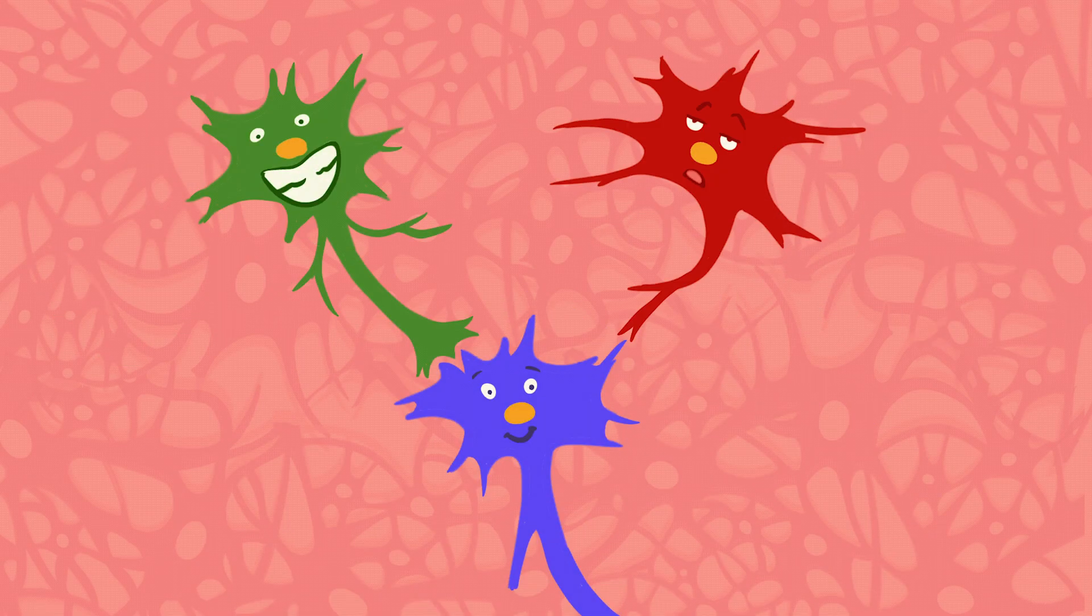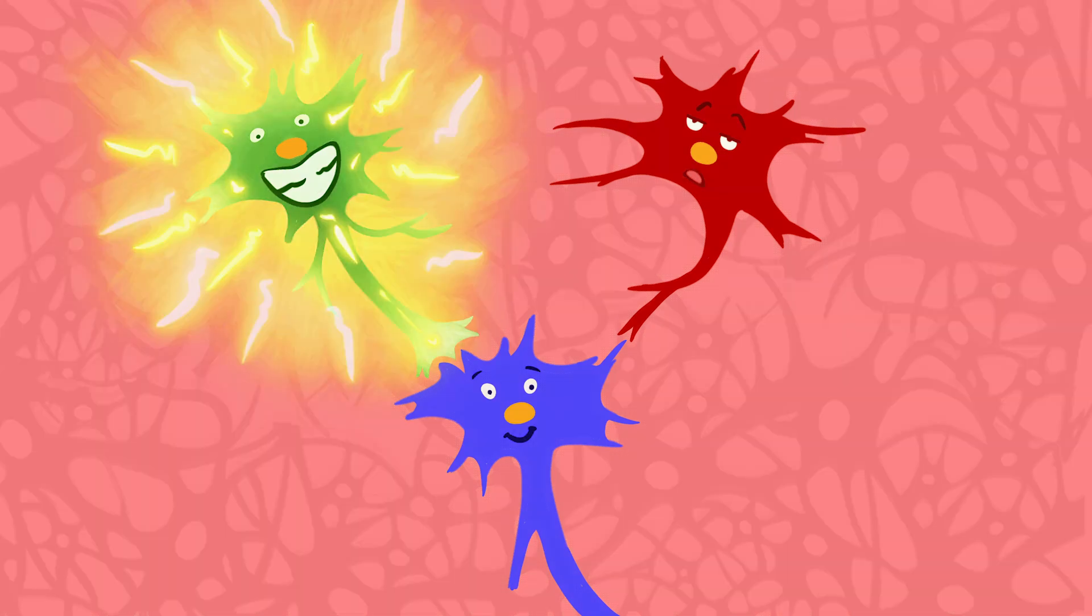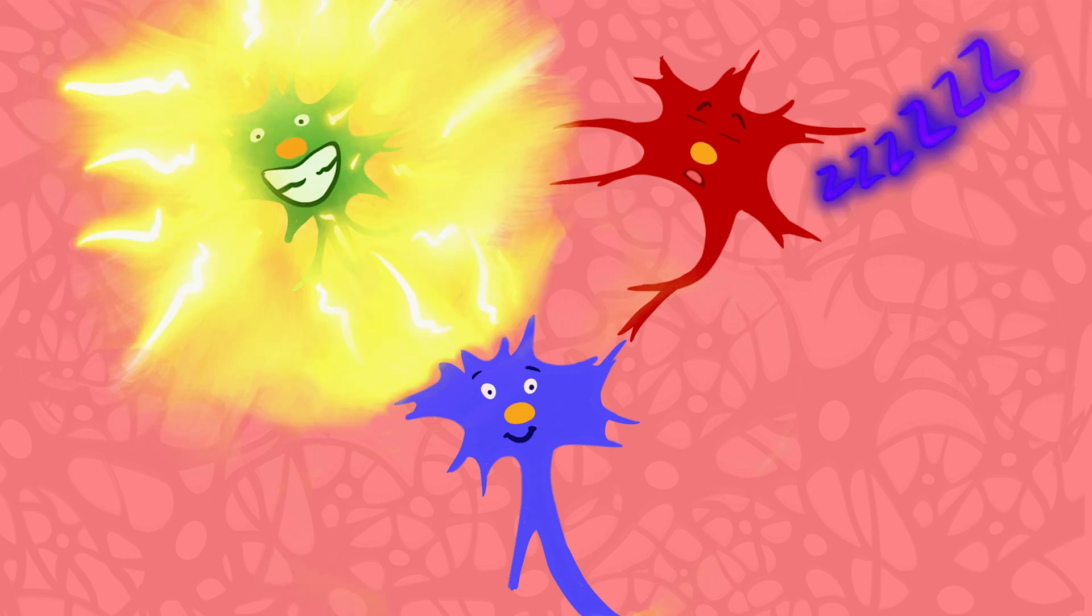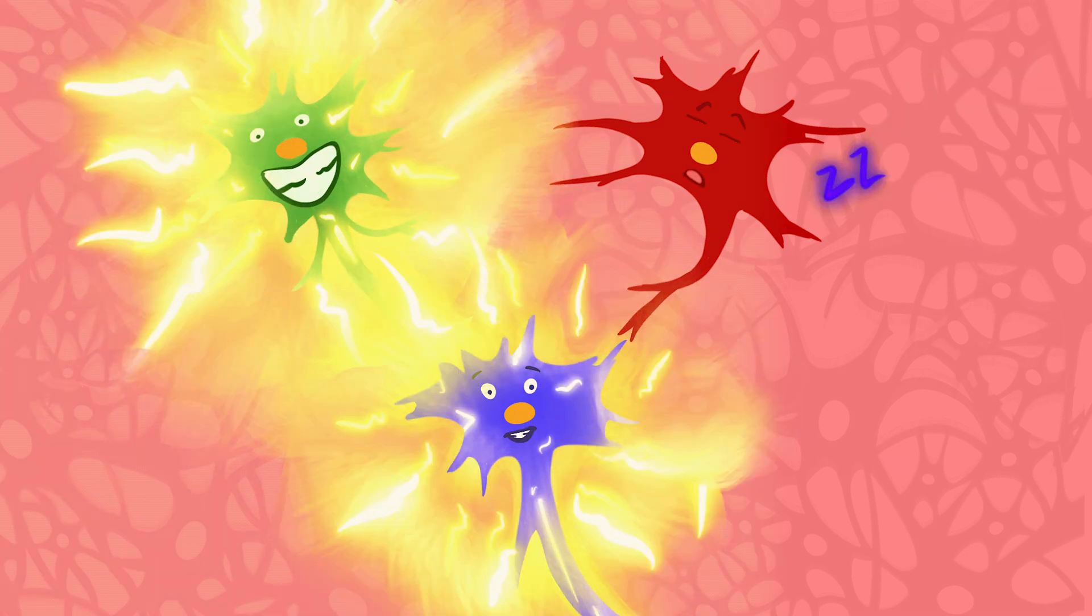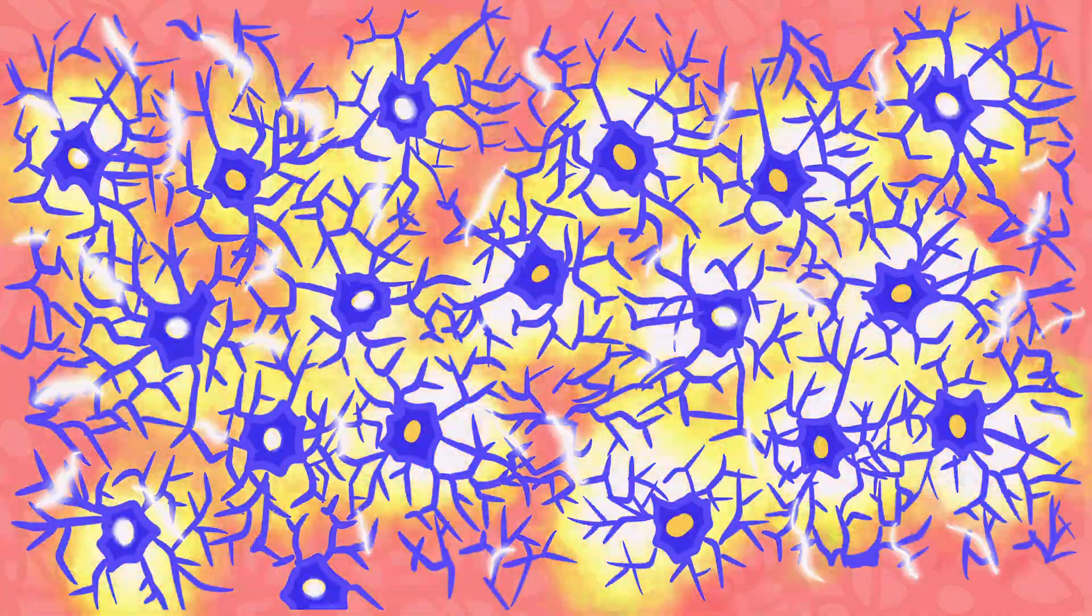So what happens during a seizure is one of two things. Either the excitatory neurons fire more than needed, or the inhibitory neurons fire less than usual. And both situations cause other neurons to fire more than they normally would.